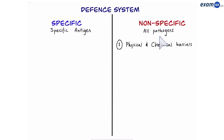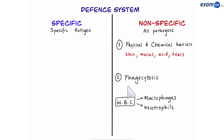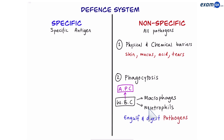In the non-specific, the first stage was our physical and chemical barriers. Examples were skin, mucus, acid in the stomach, and tears. If a pathogen managed to bypass these, then step two was phagocytosis. In this stage, white blood cells such as macrophages and neutrophils would turn into APCs by engulfing and digesting pathogens.